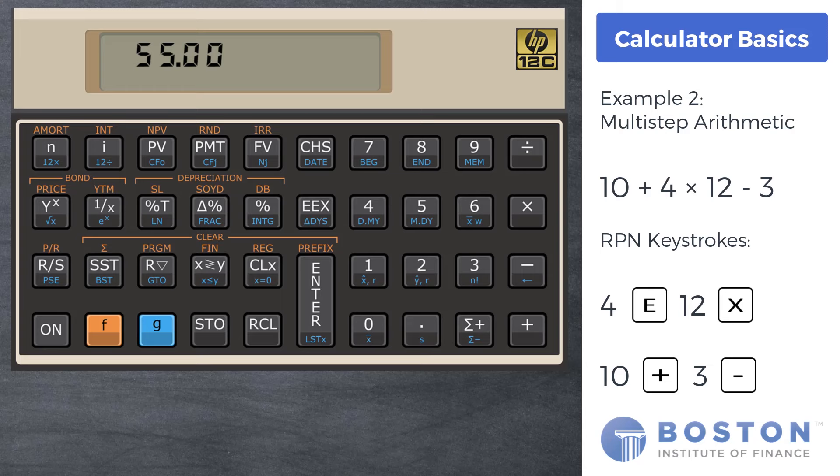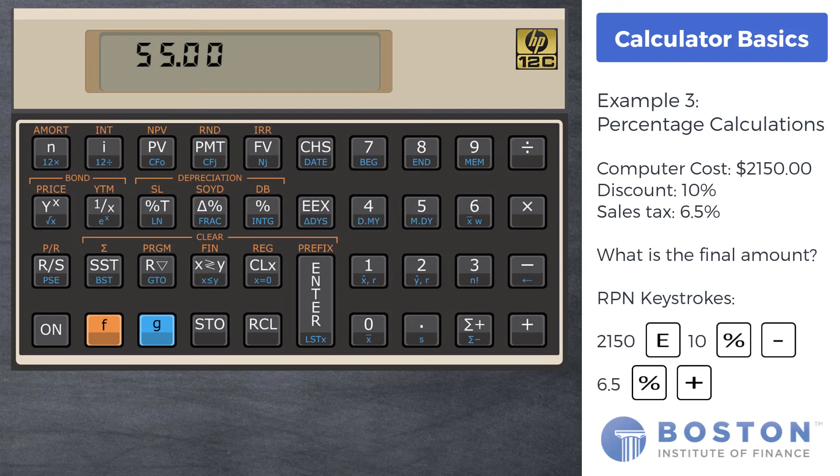As a final example, let's look at doing a percentage calculation. Let's say you're buying a computer for $2,150 with a 10% discount and 6.5% sales tax. What's the final amount? Start by pressing the CLX key. Enter 2150, enter, 10% key, minus key, then 6.5% key, plus key. $2,060.78.